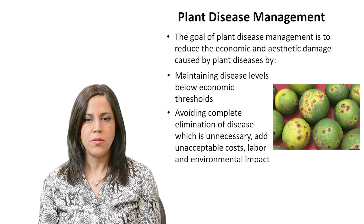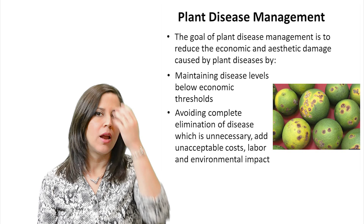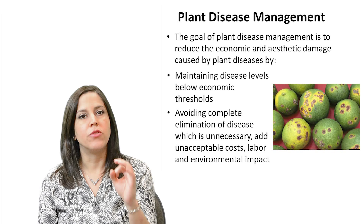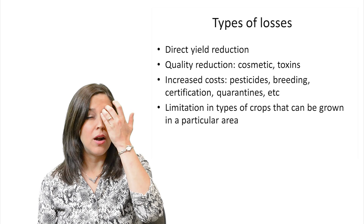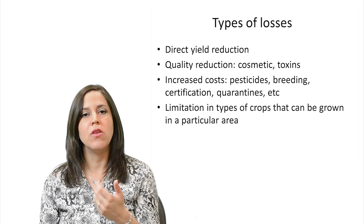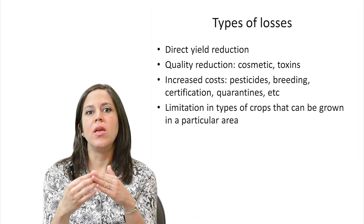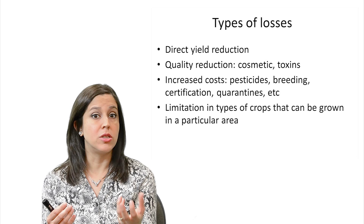This picture shows citrus canker — some of this fruit is basically unmarketable because of the damage on the citrus. The types of losses that plant diseases cause include several. The first one everybody's familiar with is direct yield reduction, which could happen because of fruit drop, giving reduced production of fruit or flowers.